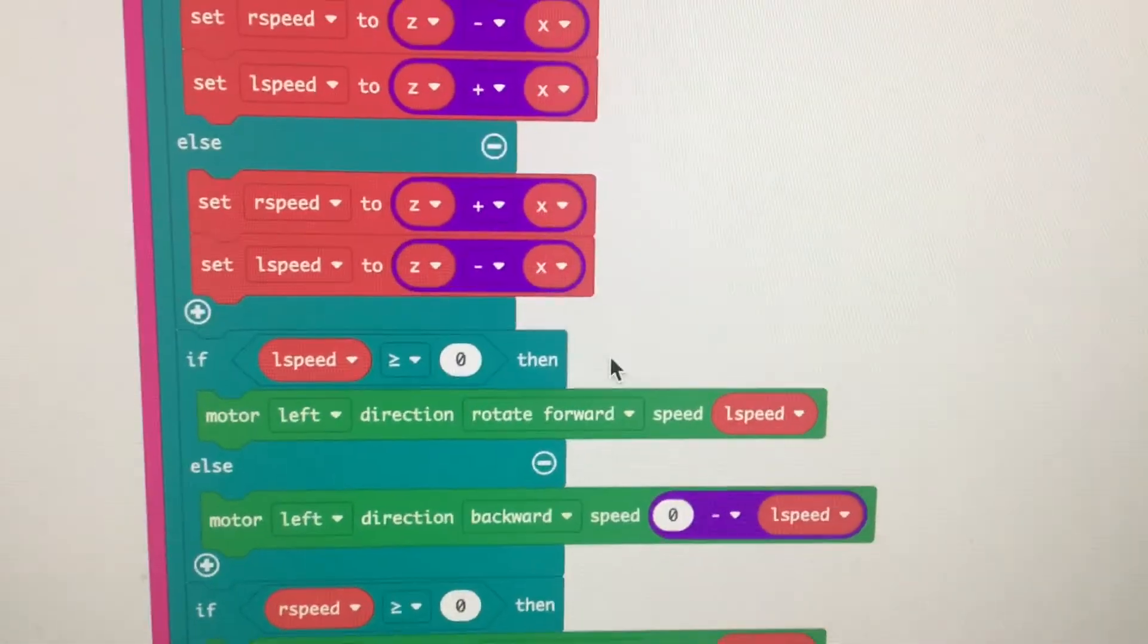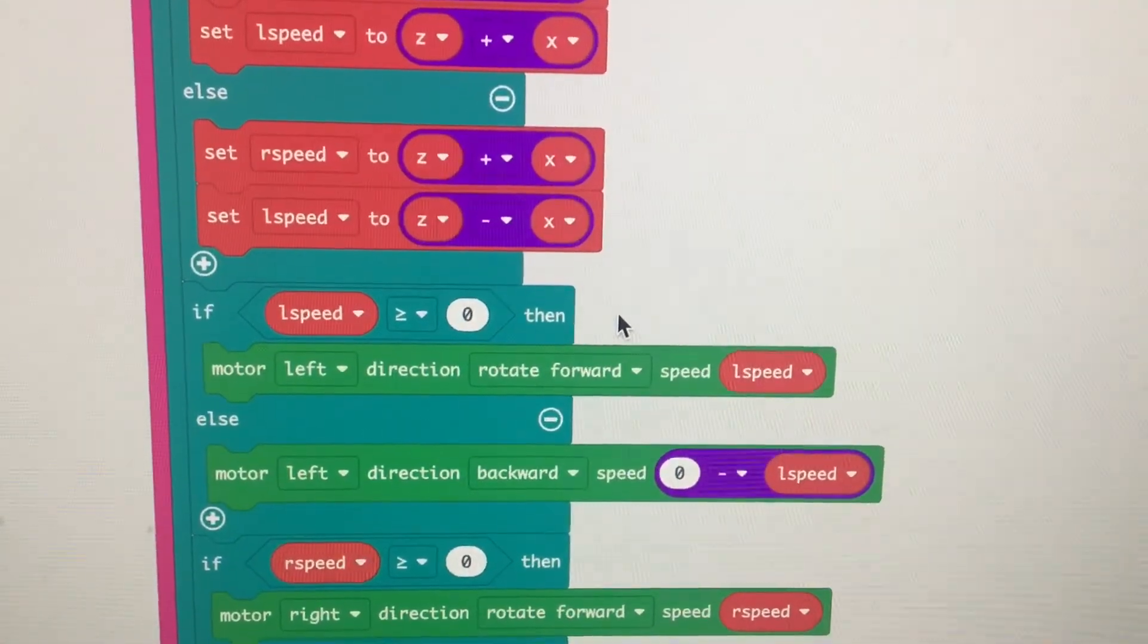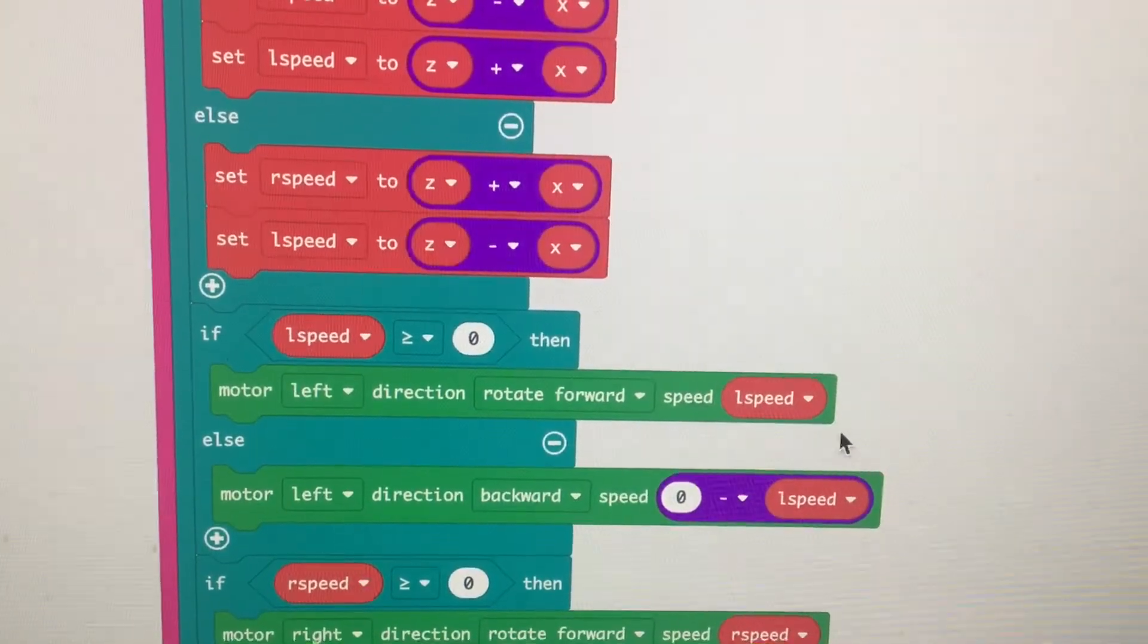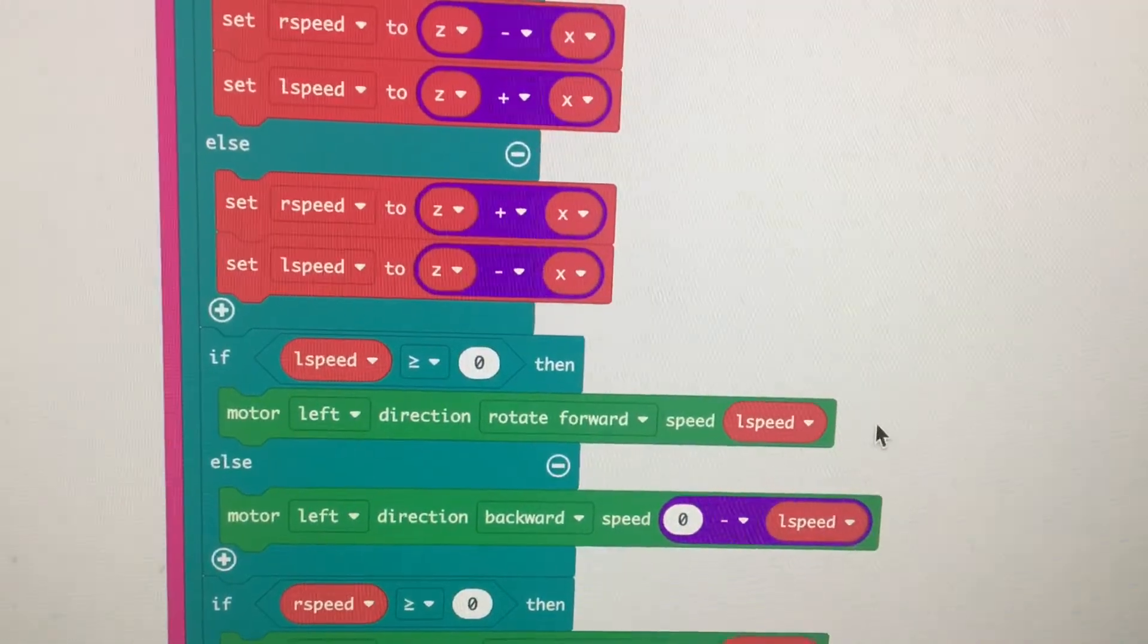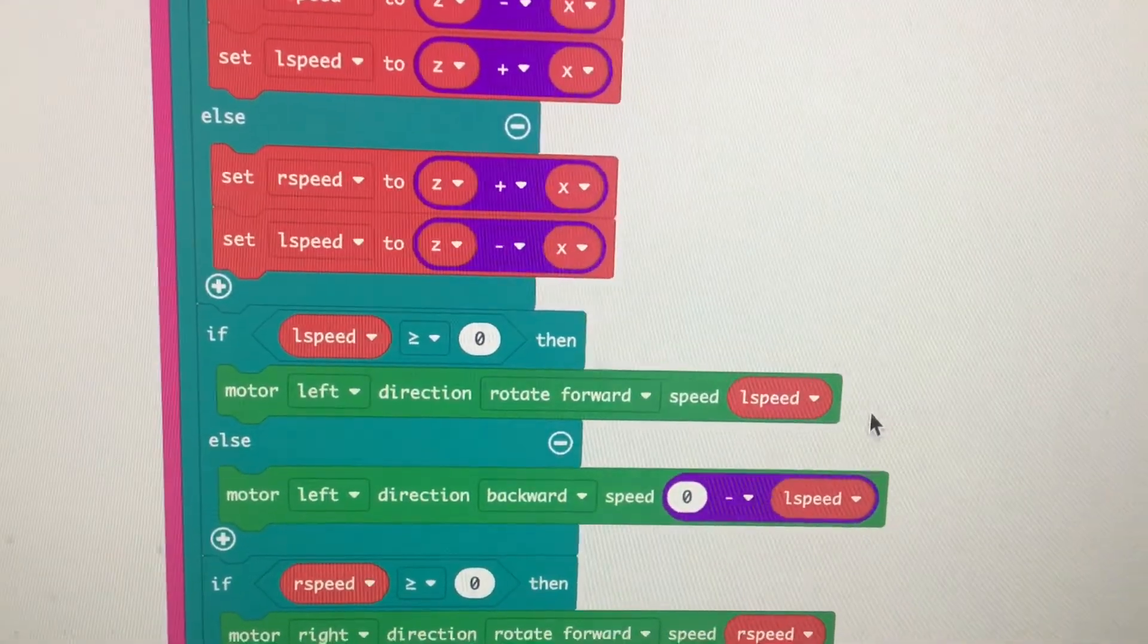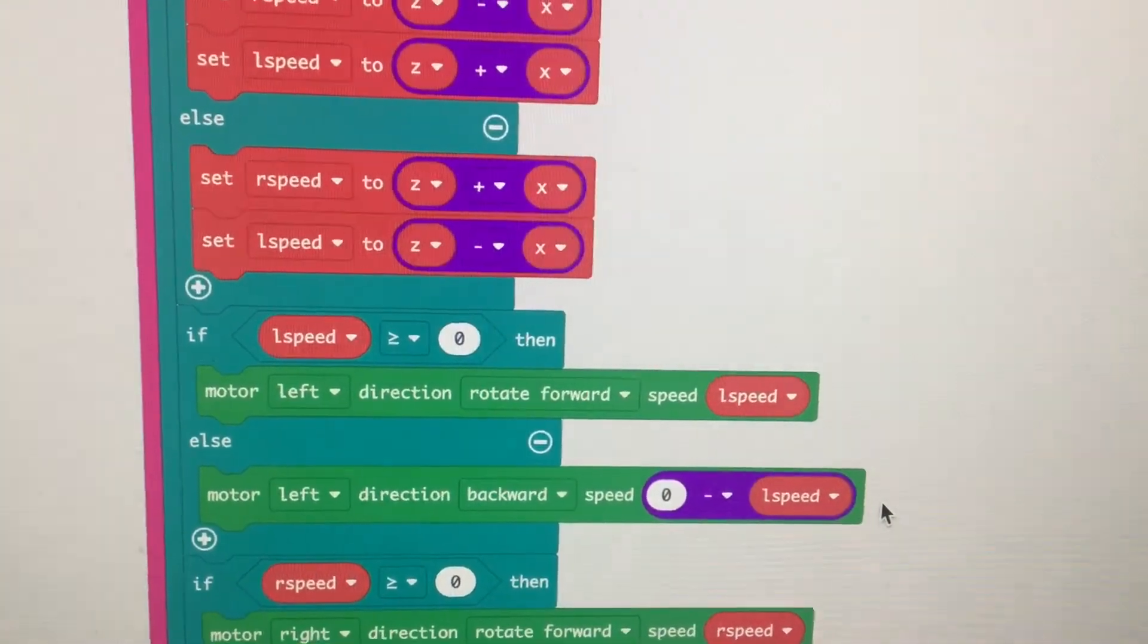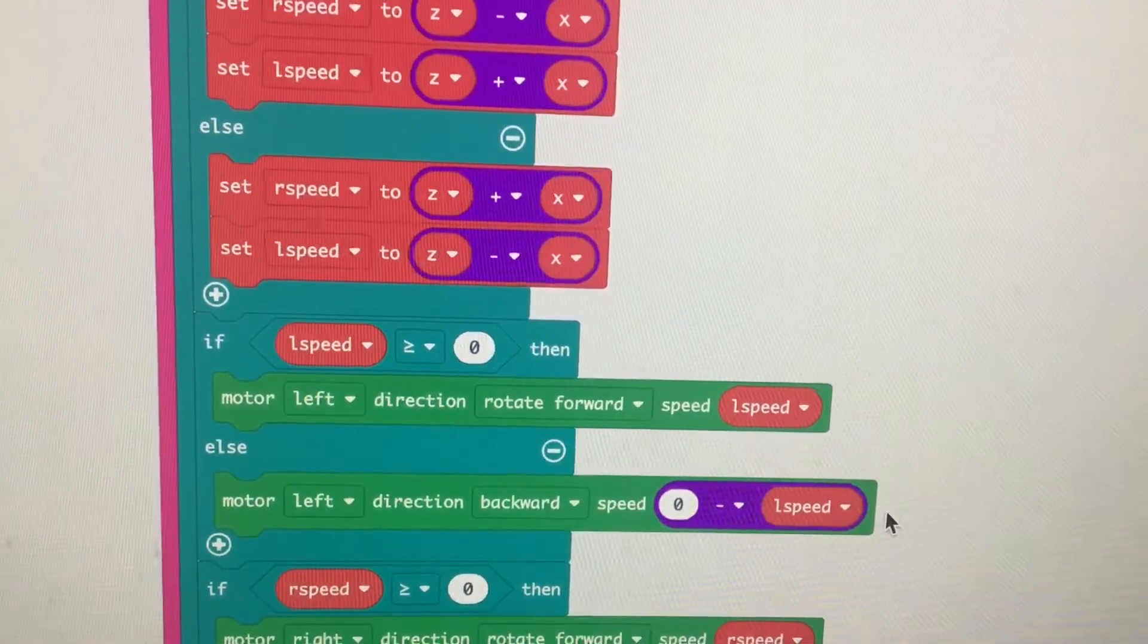Next section makes the motors actually turn. If the speed of the left wheel is positive, then move the left motor in a forward direction, speed L speed. Otherwise, move the left motor backwards with speed L speed.